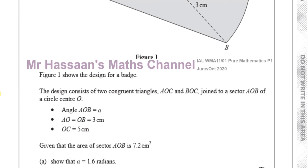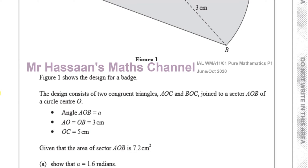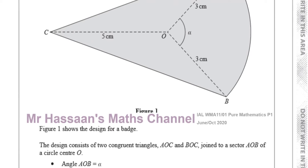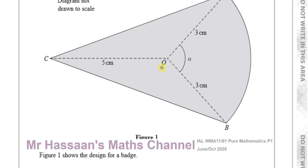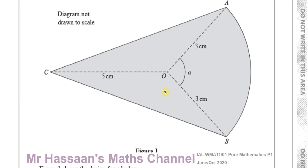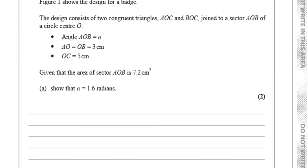Given that the area of sector AOB is 7.2 centimeters squared, show that alpha equals 1.6 radians. So this angle here, we've got to show that it's 1.6 radians, given that the area of the sector — just the sector part — is 7.2 centimeters squared.